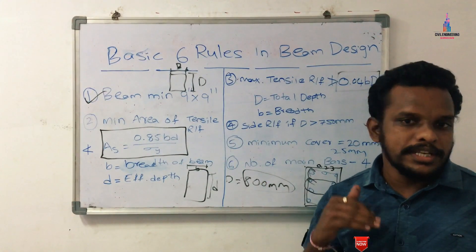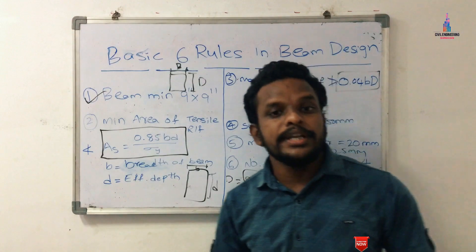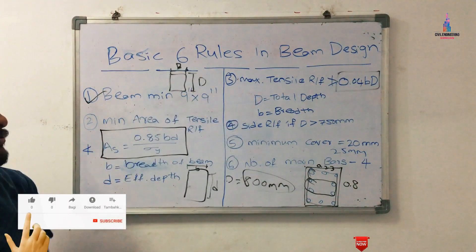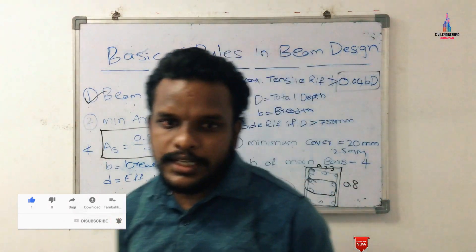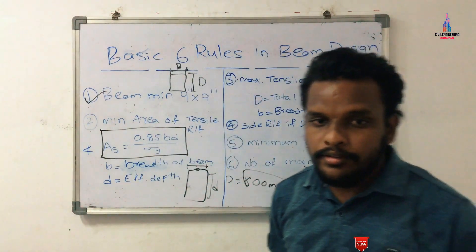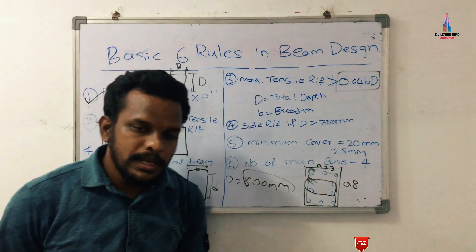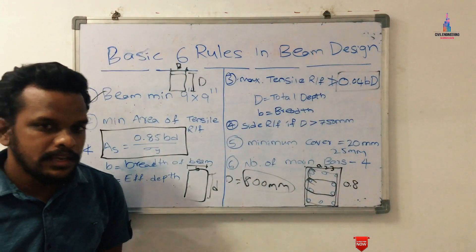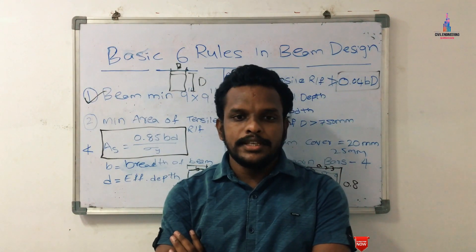To summarize the six basic rules for beam design: (1) beam dimensions should be 9 inches × 9 inches minimum; (2) minimum tensile reinforcement = 0.85 × b × d / σy, where b is breadth, d is effective depth, and σy is yield strength; (3) maximum tensile reinforcement = 0.04 × b × D, where D is total beam depth; (4) side reinforcement must be provided when depth exceeds 750 mm; (5) minimum cover is 20 mm to 25 mm; (6) minimum four bars must be provided in the beam section.